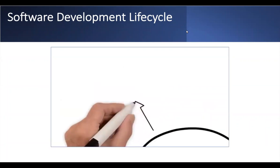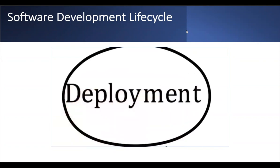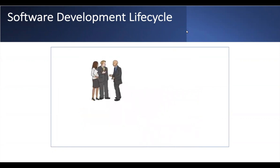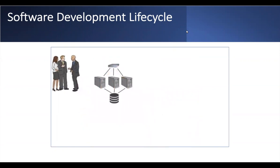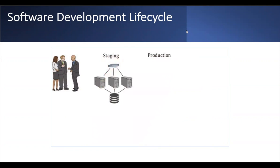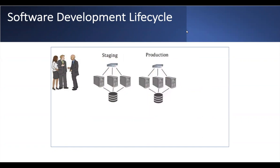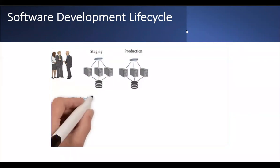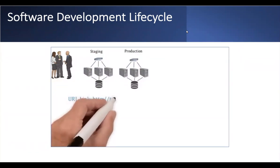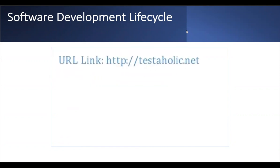Once we've completed testing and the application is ready for production, we enter the deployment phase. The operations team mirrors the staging or development environment and sets up production infrastructure — new hardware, scalable servers, databases for real users — coordinating with development teams and release managers. Once all tasks are completed, the application goes live to real users.